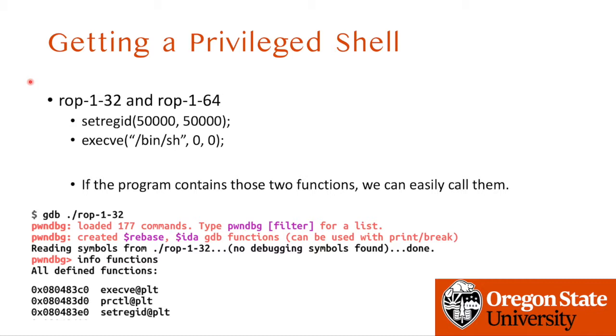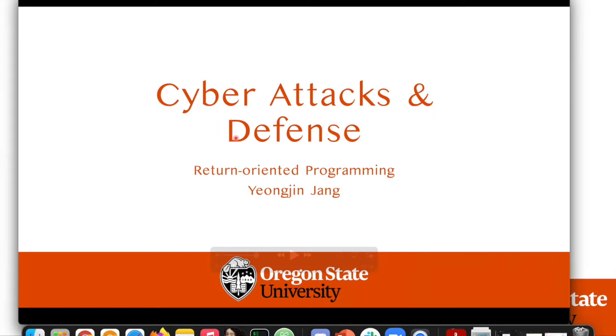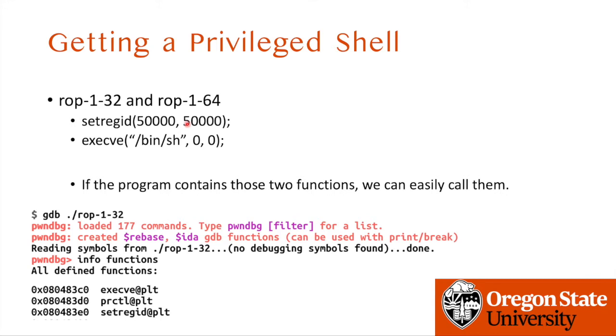In the first return-oriented programming challenge — ROP32 and ROP64 — your task is to call two functions in a chain: calling setregid with target group ID arguments such as 50000 for both arguments, and then calling execve with three arguments: /bin/sh, zero, and zero. Fortunately in the challenge, you can see all these functions at fixed addresses since these binaries are non-PIE. You can find the fixed addresses by opening the file with GDB and running the info functions command.